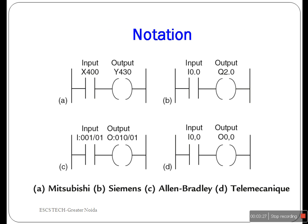In ladder programming, the names of the associated variables — such as input and output addresses of each element — are appended to its symbol. This figure shows how the same ladder diagram would appear using different PLC brands: Mitsubishi, Siemens, Allen Bradley, and Tally, illustrating the notations for the addresses.